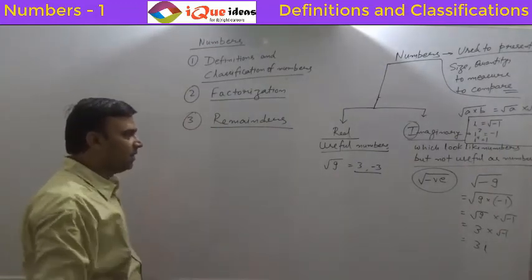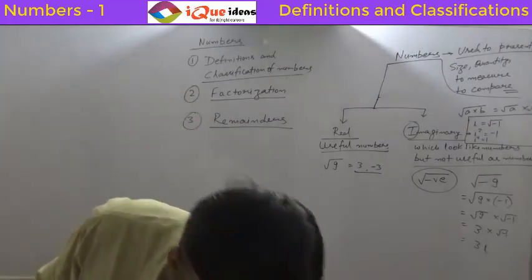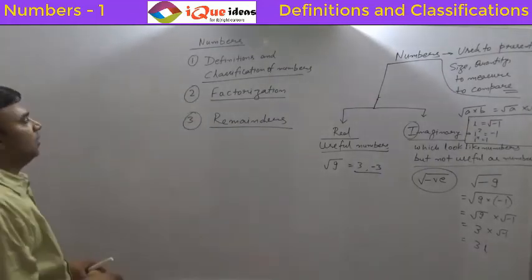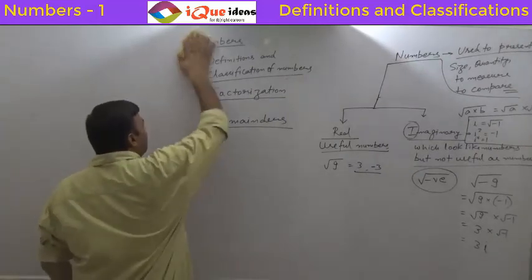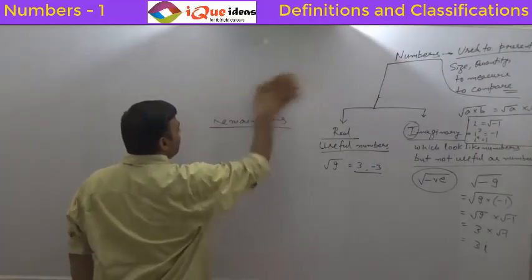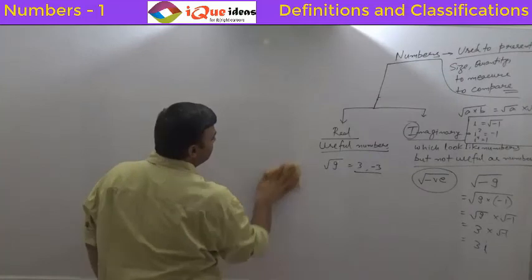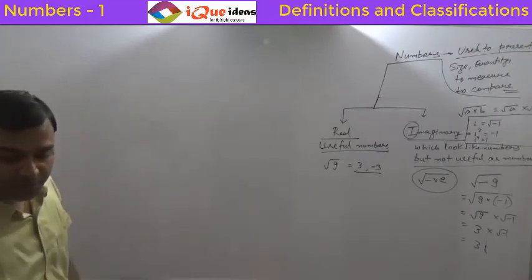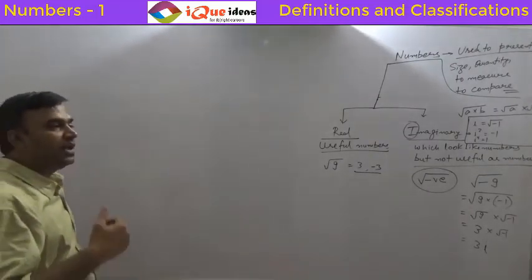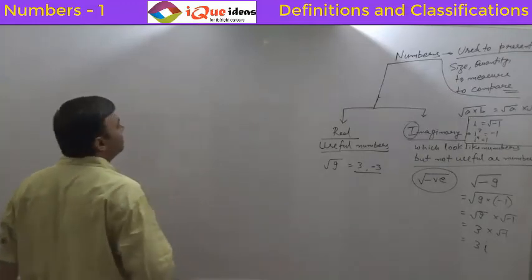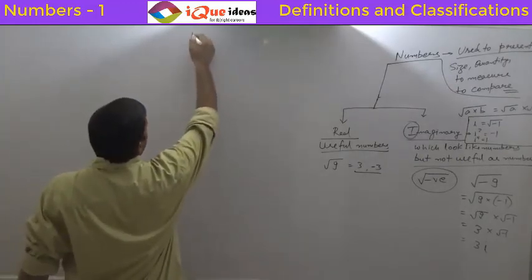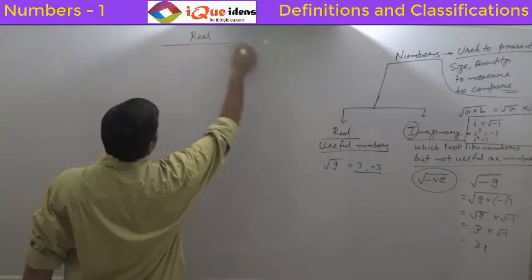Now let us come back to real numbers. Real numbers are those which are very useful for us. Real numbers further can be divided into types. Any number which is useful, they are all real. So real can be further divided into two types on the basis of their usability or on the basis of their presentation. Real numbers can be further divided into two types.